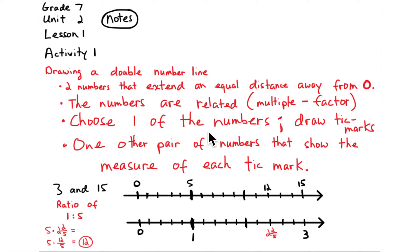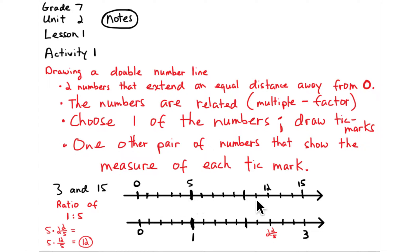Choose one of the numbers — either the 3 or the 15 — and make the appropriate tick marks. If I chose 3, I'd make tick marks here and here, and then the appropriate marks for the 15 up here and up here. Then I filled in more by placing tick marks for every single unit along the way up to 15, and the same up to 3. One other pair of numbers should also appear on the double number line — I chose 1 and 5.